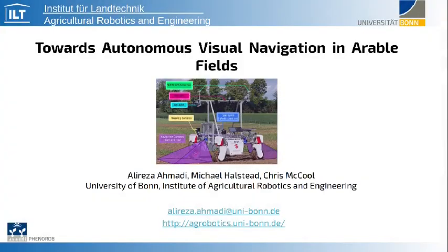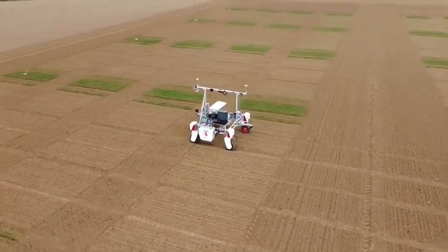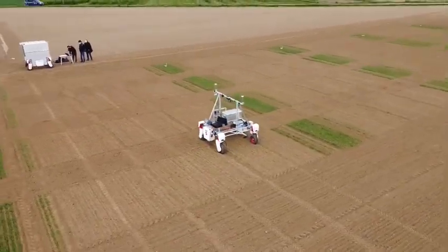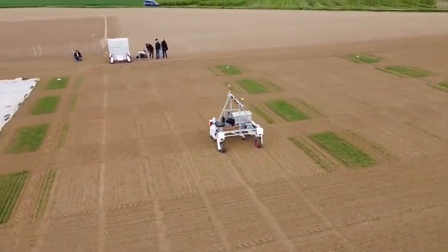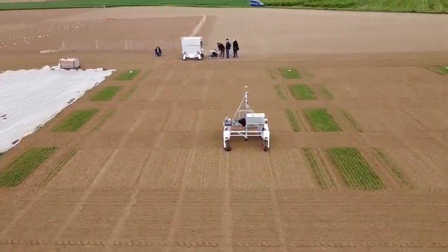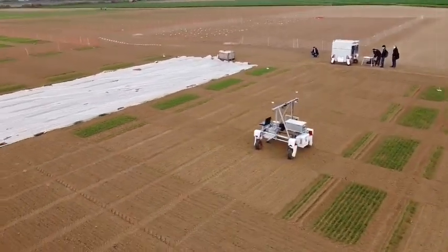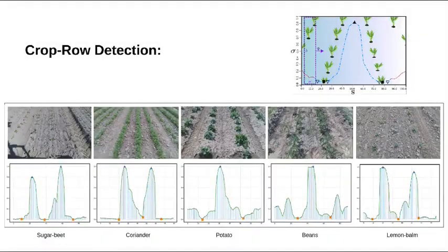We present the paper 'Towards Autonomous Crop Agnostic Visual Navigation in Arable Fields.' Our crop-agnostic navigation scheme is able to guide the robot through lanes of crops, and we have extensively tested it for different crop types and different conditions.